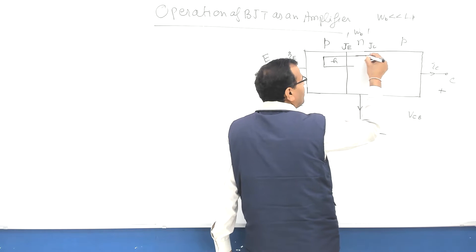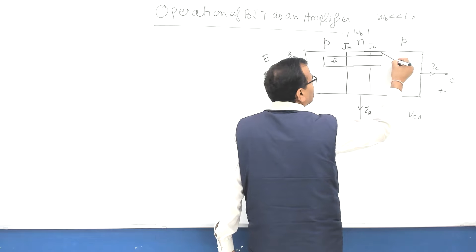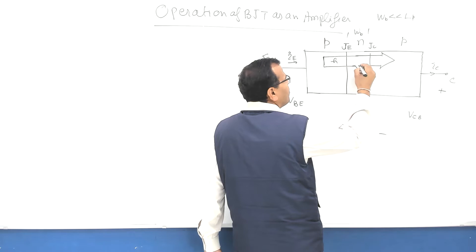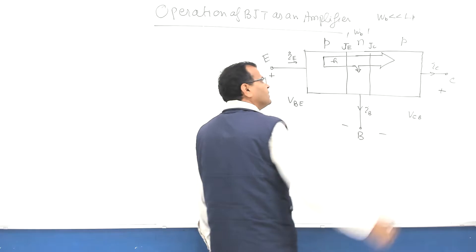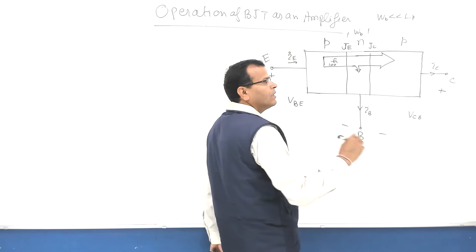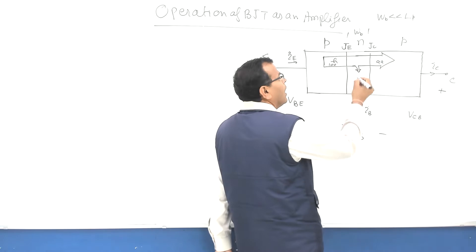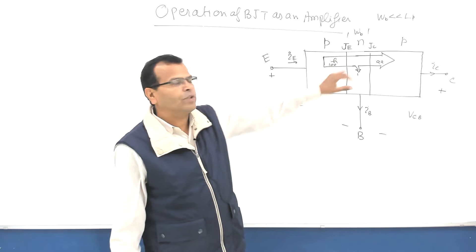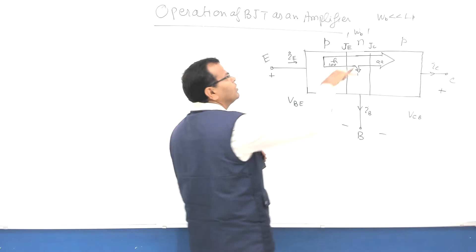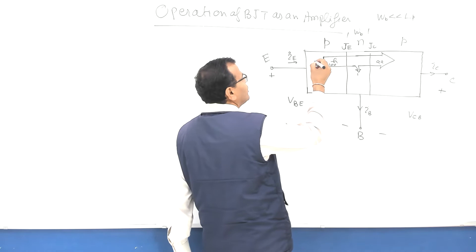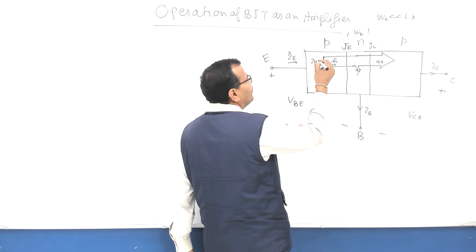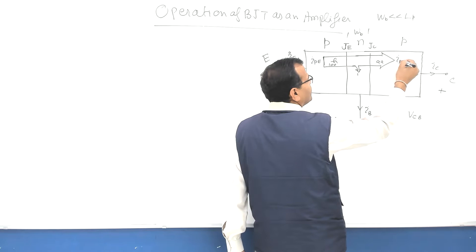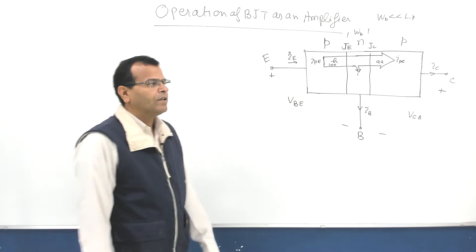When holes are injected, these will be moving towards the collector, and most of the holes will move to the collector side. Only a few will be recombining in the base region. If you have 100 holes, maybe 99 may pass over to the collector and one may be recombining — that hole will be recombined with an electron in the base region. This constitutes the component of emitter current due to holes, and this constitutes the collector current due to majority carriers.